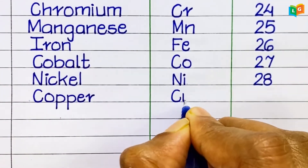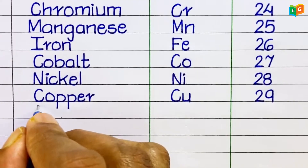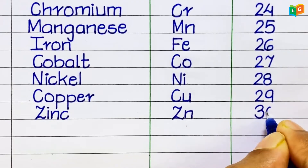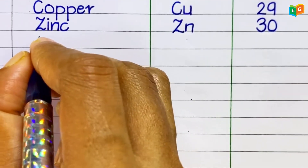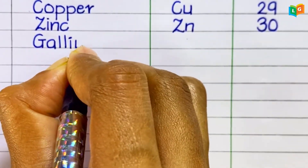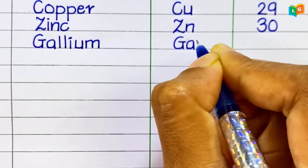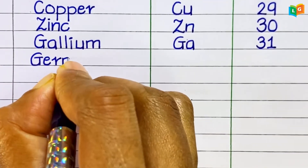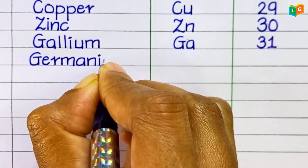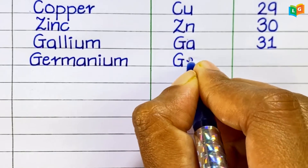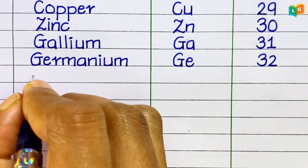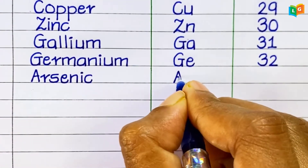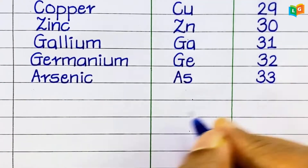Copper, symbol Cu, atomic number 29. Zinc, symbol Zn, atomic number 30. Gallium, symbol Ga, atomic number 31. Germanium, symbol Ge, atomic number 32.